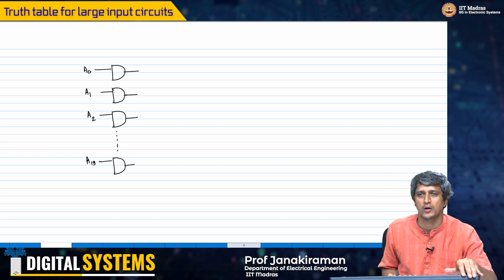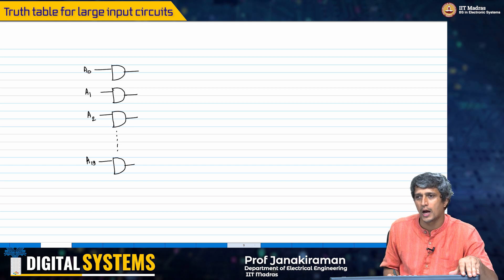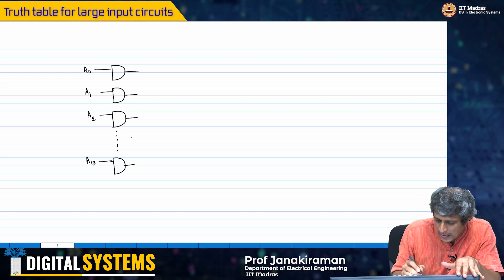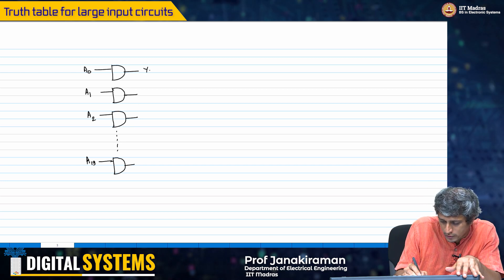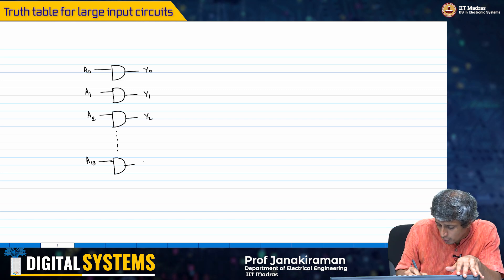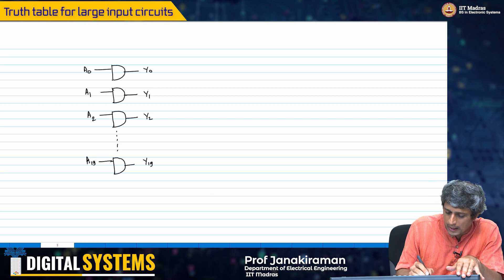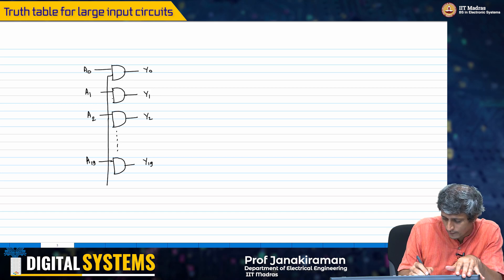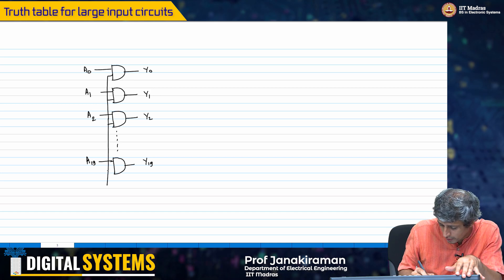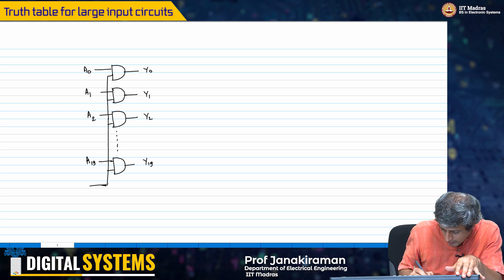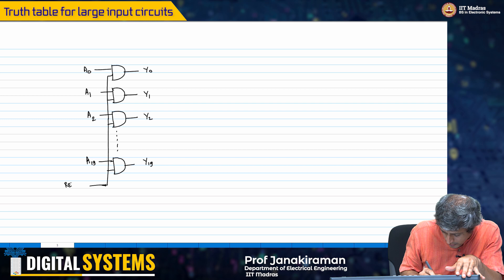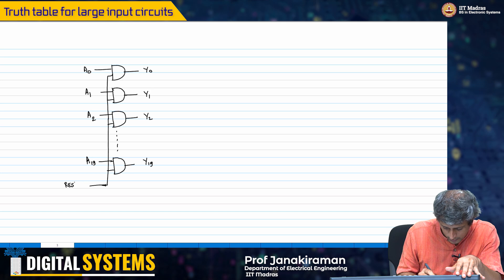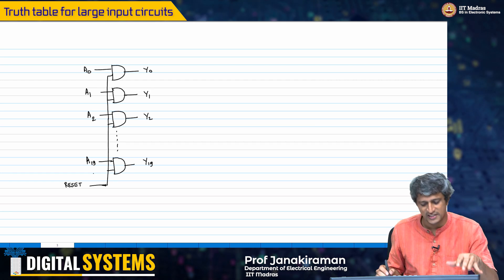2 power 20 is 1024 times 1024, so we're talking about a million combinations already. Now I have therefore 20 outputs: y0, y1, y2, all the way to y19. And what is the other input? The other input is a common input to all the gates - there is no dot anywhere on this line. This is typically a reset signal.